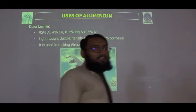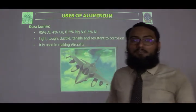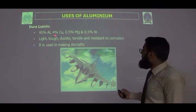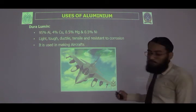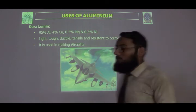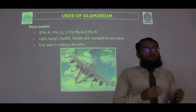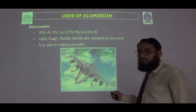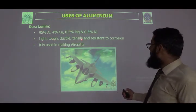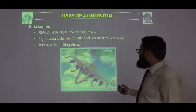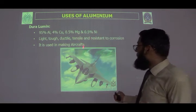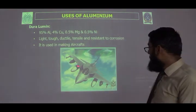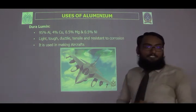Another aluminium alloy, duralumin, is made of approximately 90% aluminium, 4% copper, 0.5% magnesium, and nickel. This alloy is light, tough, ductile, tensile, and resistant to corrosion. It is used for making aircraft. Here we have a picture of an F-16 aircraft as an example of duralumin application.